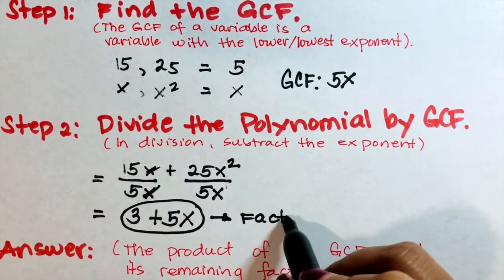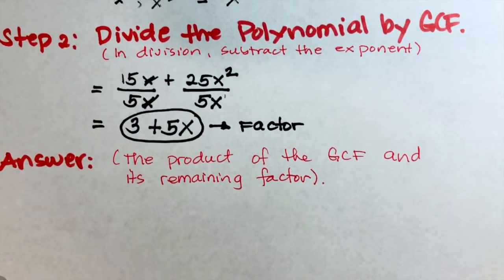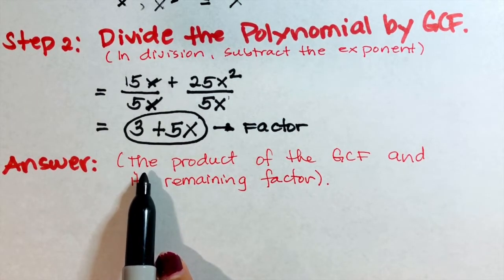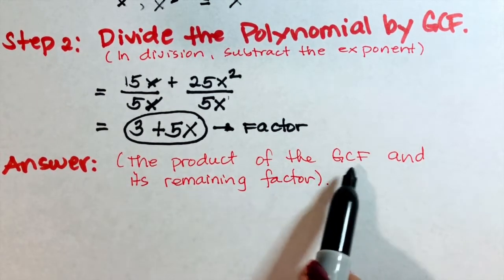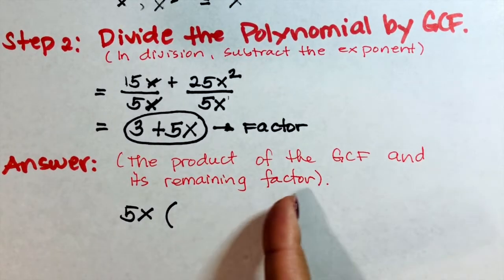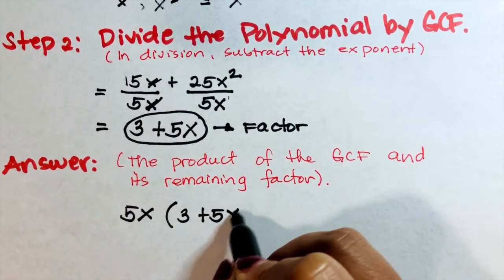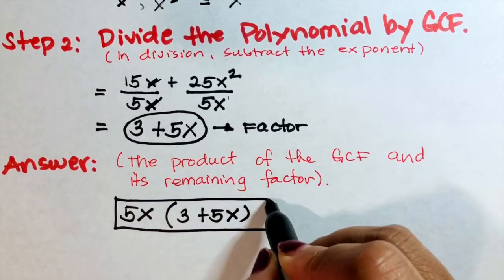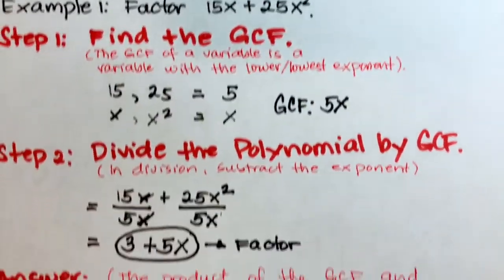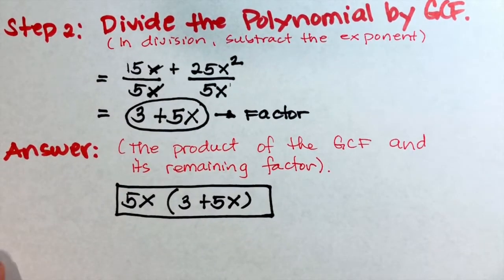Now write the final answer as the product of the GCF and its remaining factor. The GCF is 5x and the other factor is 3 plus 5x. Therefore, the factors of 15x plus 25x squared are 5x times (3 plus 5x).